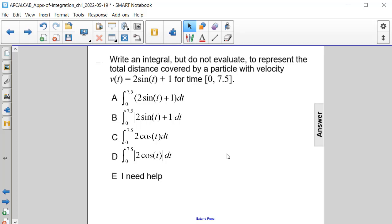Write an integral, but do not evaluate, to represent the total distance covered by a particle with velocity v(t) = 2sin(t) + 1 for time t in [0, 7.5], including both endpoints.